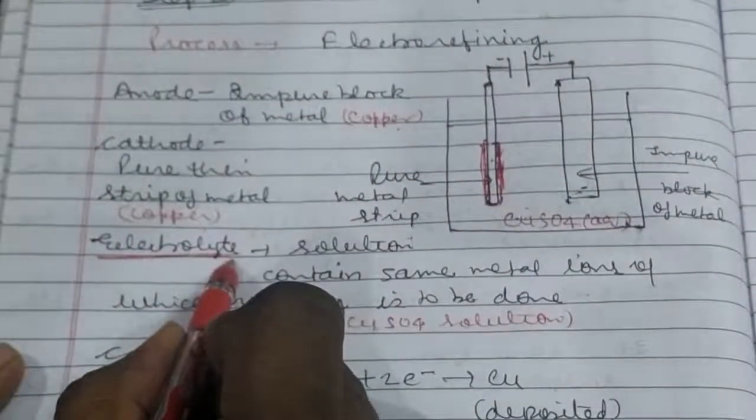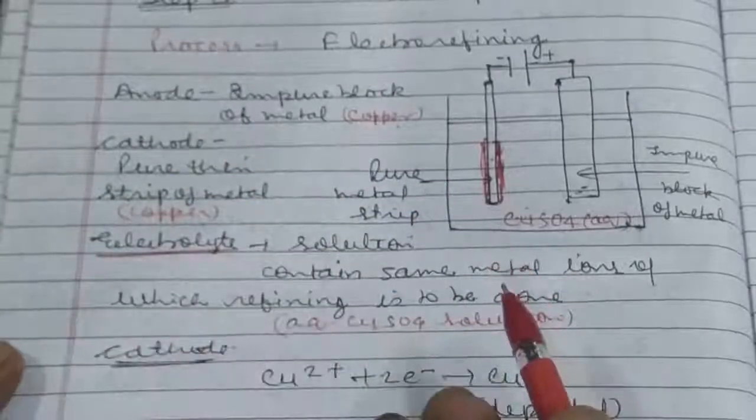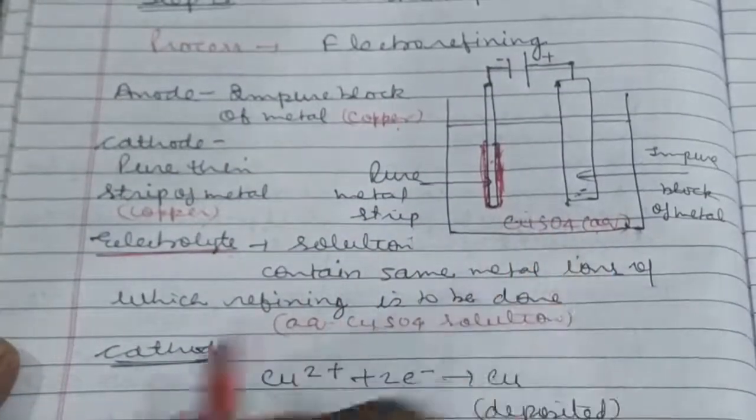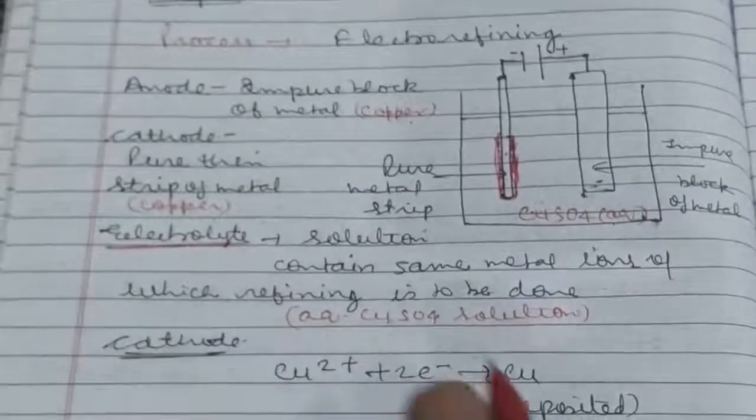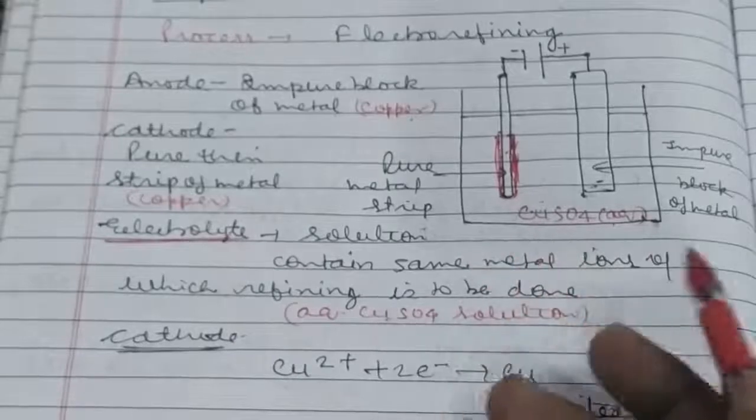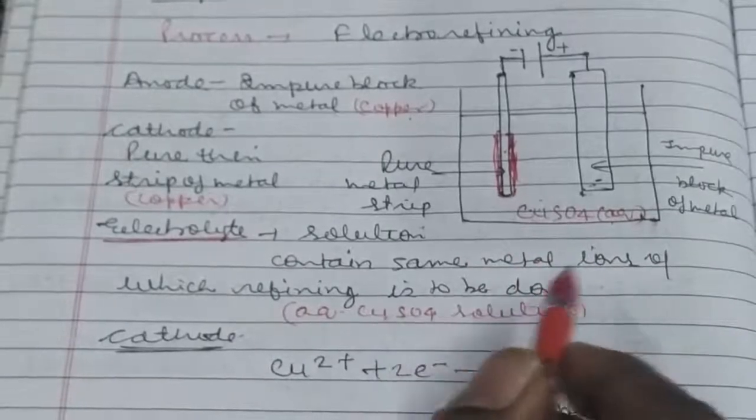Electrolyte, whatever electrode you will take. If you have to do the refining of copper, then you will use the aqueous solution of copper sulfate. If you have to do the refining of some other metal like zinc, you will use aqueous zinc sulfate solution. Similarly, the electrolyte should contain the same metal ion.